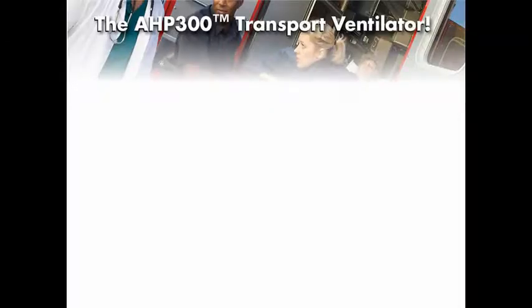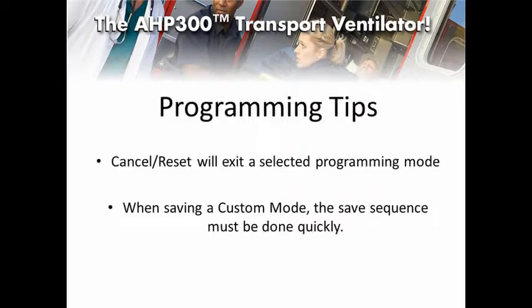Custom modes two and three can be programmed using the same process used for programming custom mode one. Here are some final tips: at any time when you are in a programming sequence, pressing the cancel/reset button will exit you from that programming mode without saving your settings. Therefore, if you get an alarm during programming, it's best to allow it to occur and save your program before canceling the alarm. On the custom modes in particular, the save sequence must be done within two seconds, or it will exit out of the programming mode without saving. Be ready to press and hold the custom mode select button and then immediately press the mode selection button to ensure your settings are saved.